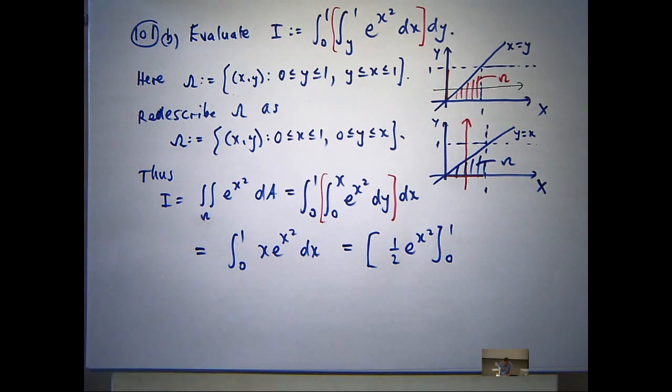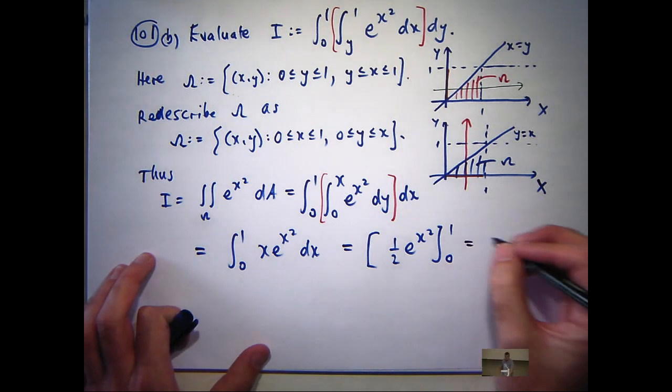If you want to do it the long way, you can use the substitution, u equals x squared. Don't do it by parts, though, I wouldn't recommend that. So when you plug in x equals 1 and x equals 0, you'll get something like this.